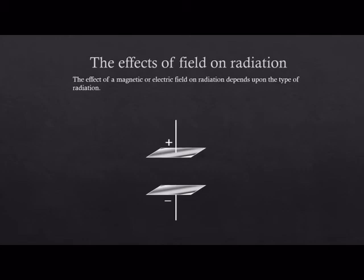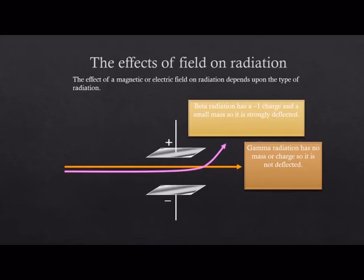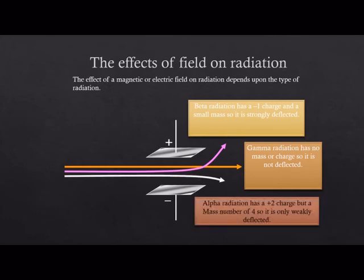What would be the effect on this radiation if you apply an electric field? Gamma rays, as they don't have any charge, would be undeflected. Beta particles will have strong deflection as they have a negative charge and small mass. On the other hand, alpha radiation has two positive charges but four atomic mass units, hence the deflection is comparatively less.